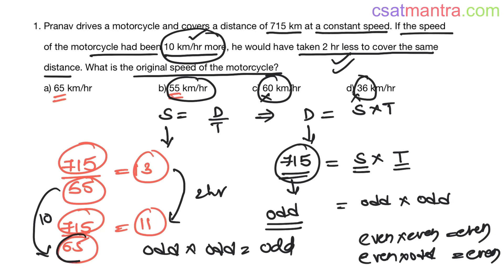So if he goes at 65 kilometers per hour, it takes 11 hours. That is two hours lesser than 13. So 55 kilometers per hour is your original speed.